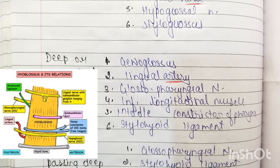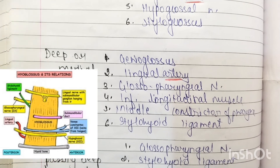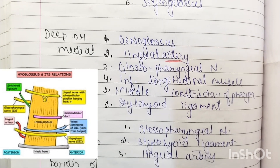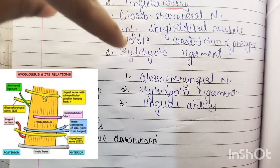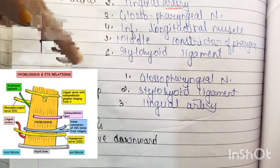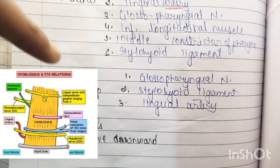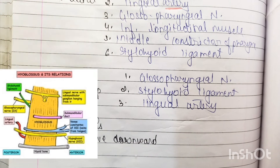Now, the structures passing deep to the posterior border of the hyoglossus are: the glossopharyngeal nerve, the stylohyoid ligament, and the lingual artery.